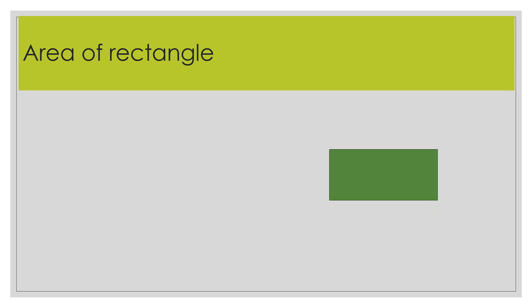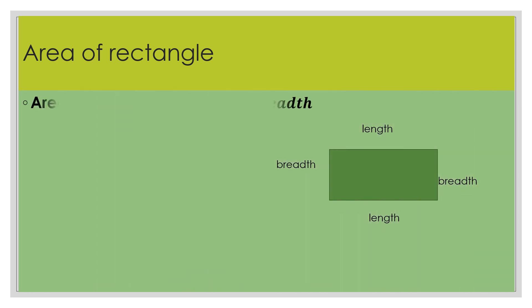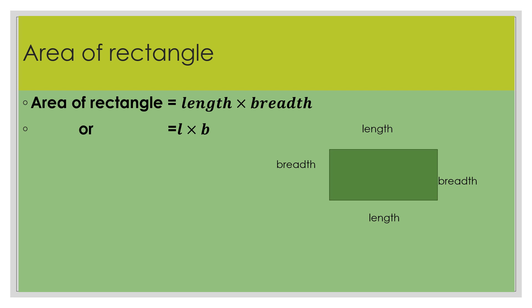What is the area of a rectangle? In a rectangle, opposite sides are equal — length equals length, and breadth equals breadth. The formula for the area of a rectangle is equal to length into breadth, or L into B.